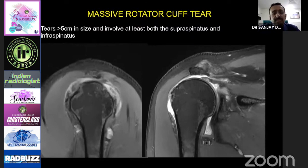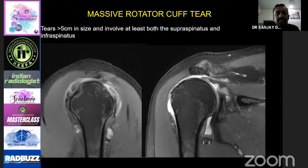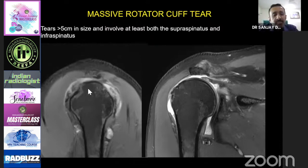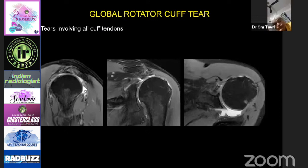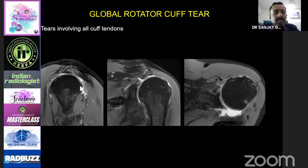A massive rotator cuff tear is defined as a tear more than 5 centimeters in size involving at least two muscles. It usually involves the combination of supraspinatus and infraspinatus tendons. In this patient, the subscapularis and teres minor are intact, but there is a tear of both supraspinatus and infraspinatus — that is a massive tear. Whenever there is complete tear of all tendons — subscapularis, supraspinatus, and infraspinatus — except possibly the teres minor, that is called a global rotator cuff tear.